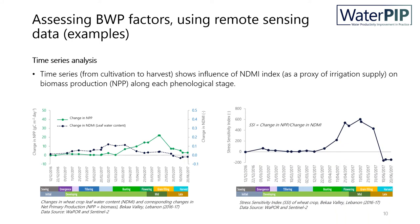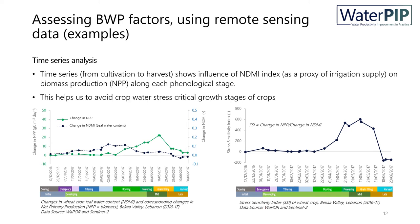To better understand how biomass production is changing in relation to irrigation water supply, look at this stress sensitivity index. It is calculated by dividing changes in NPP or biomass production over changes in NDMI or irrigation supply. The stress sensitivity index of the wheat crop from sowing up to the booting stage is zero, meaning that changes in irrigation supply do not cause significant changes in biomass production. But in the booting, flowering, and grain filling stages, this index is very high, meaning that minor changes in irrigation supply can lead to significant changes in biomass production. Such analyses are very important to identify critical crop growth stages and to avoid water stress in those critical stages in order to prevent huge yield losses.